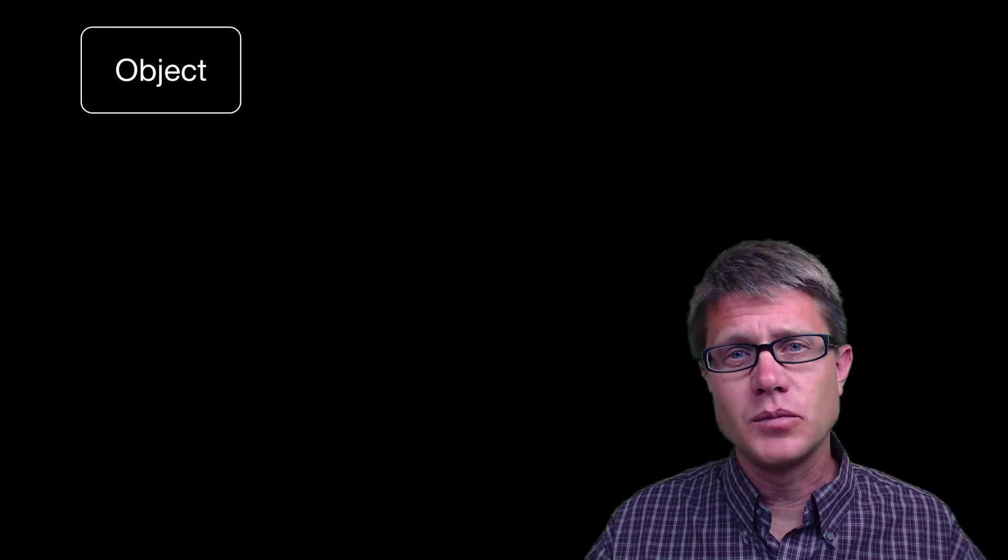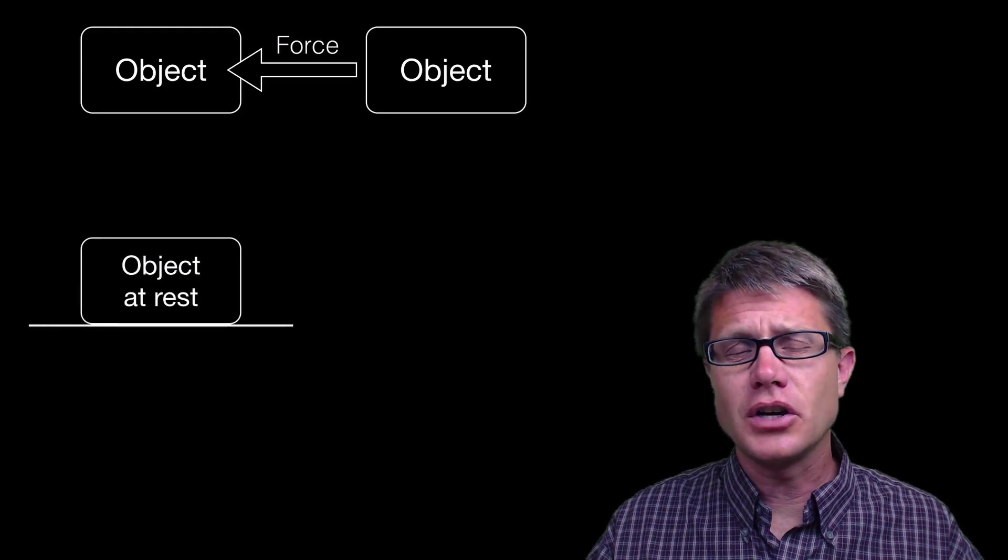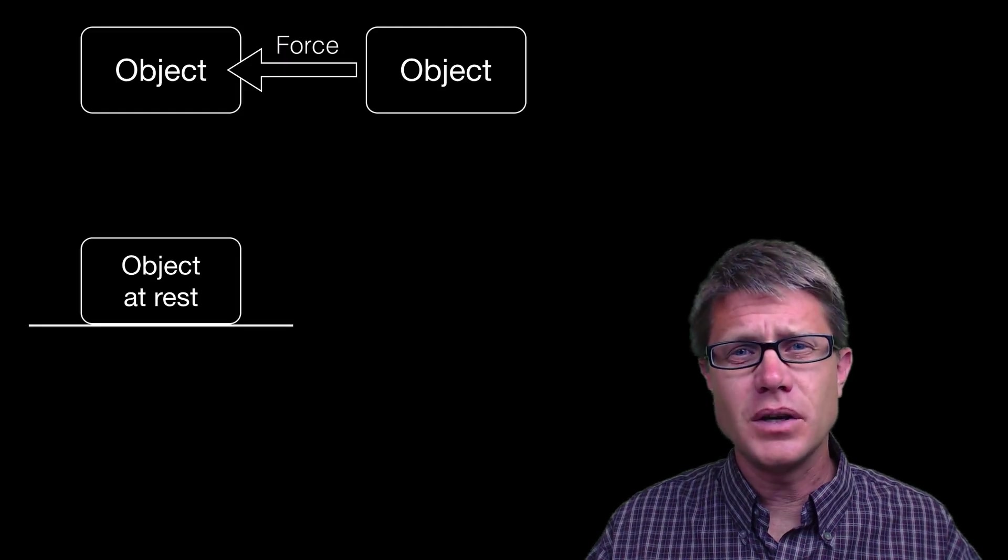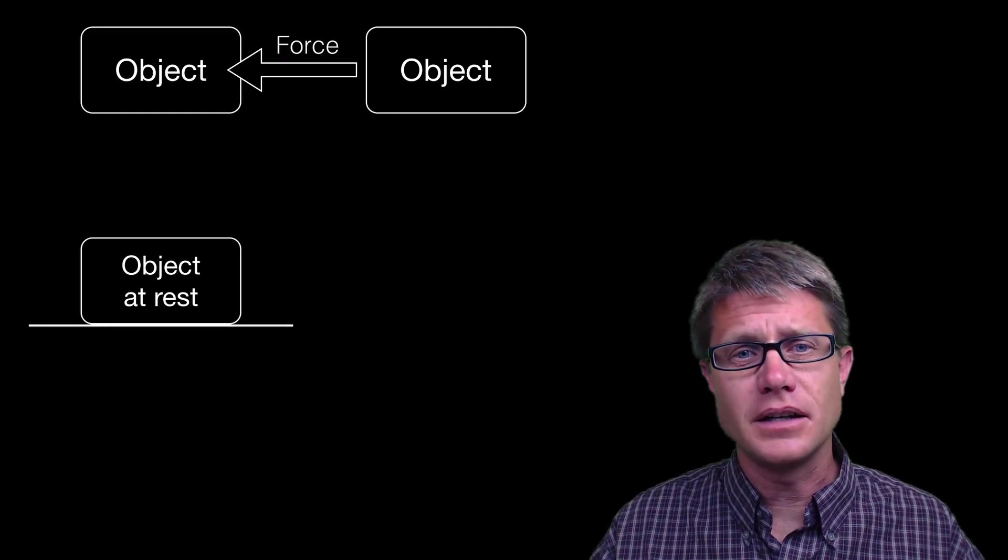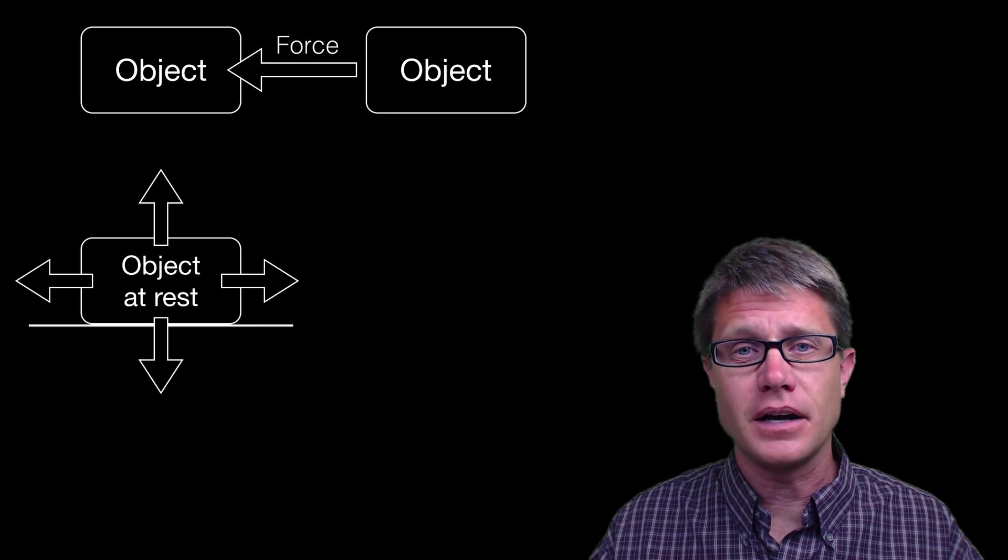So if you ever have an object that is having a force applied to it, that means that there is another object. And just because an object is at rest doesn't mean that there are not any other forces acting on it. They might just all be balanced. So we could have balanced net forces acting on that object.